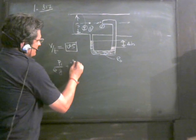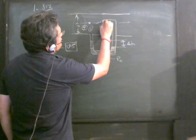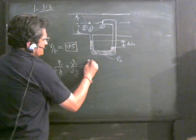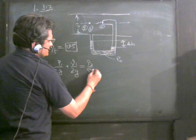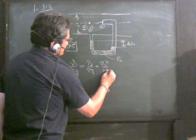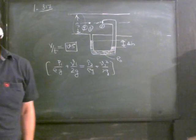So p₁/ρg + v₁²/2g—height at these two places is the same, so I'm not writing it—equals p₂/ρg + v₂²/2g. This is the Bernoulli equation for points 1 and 2.